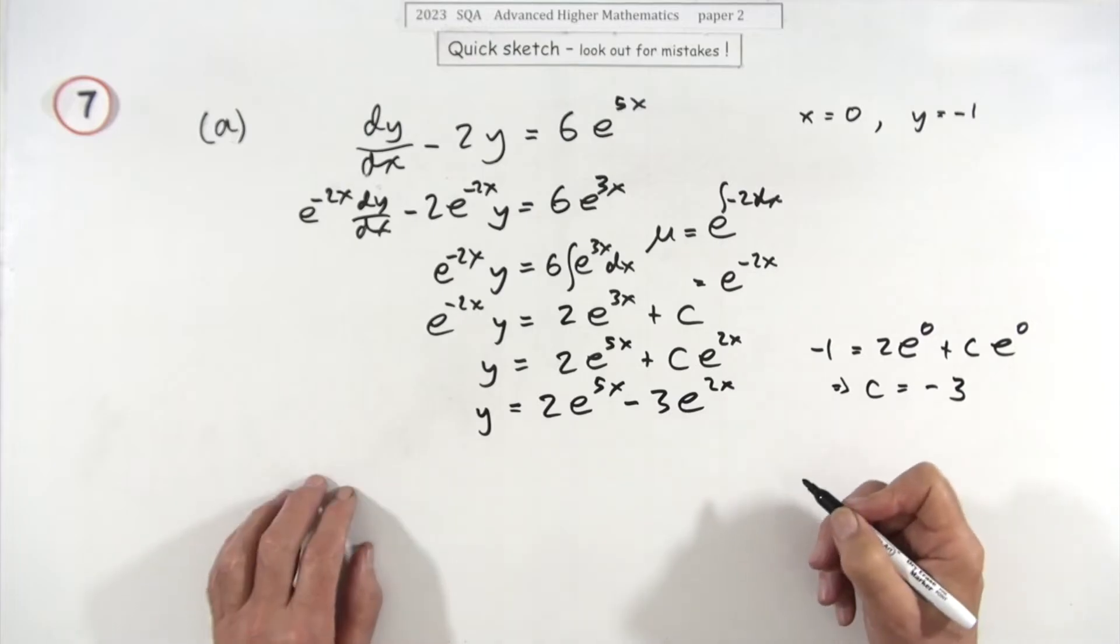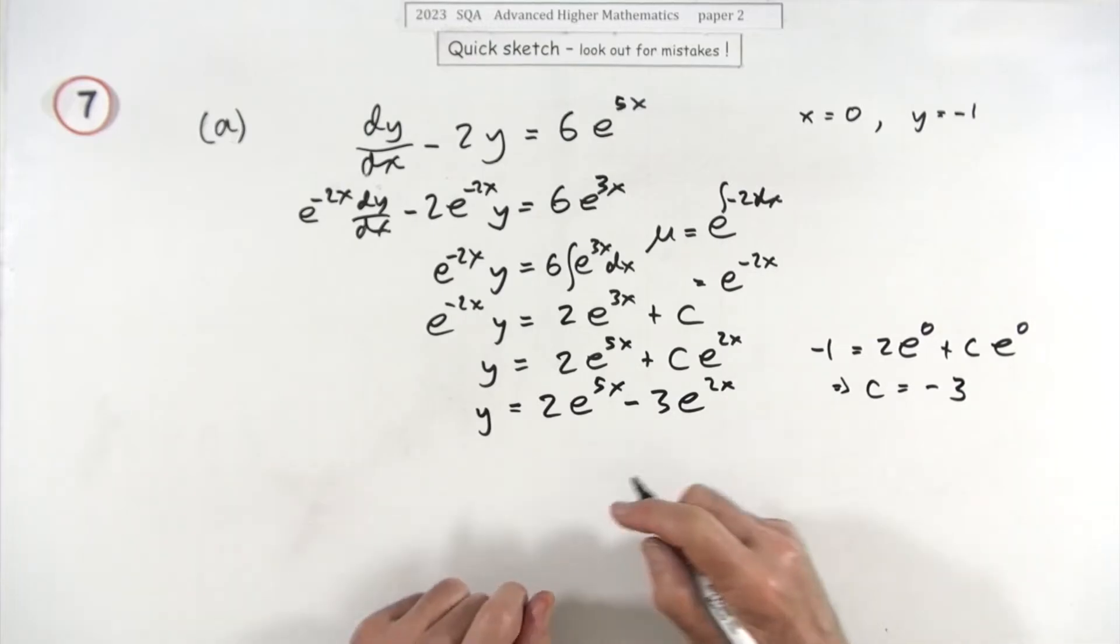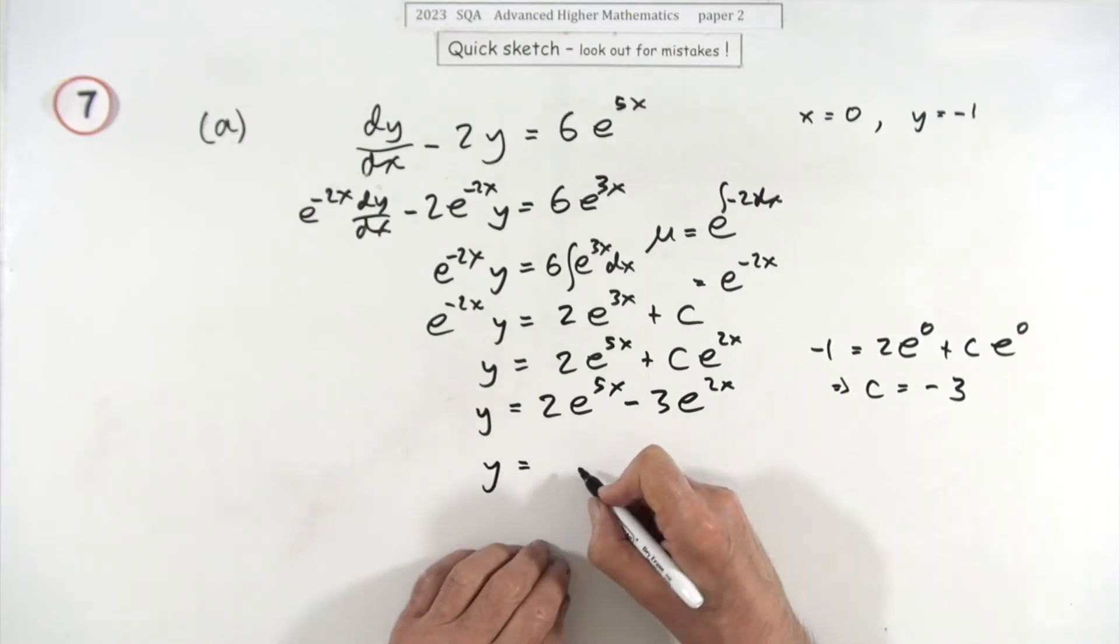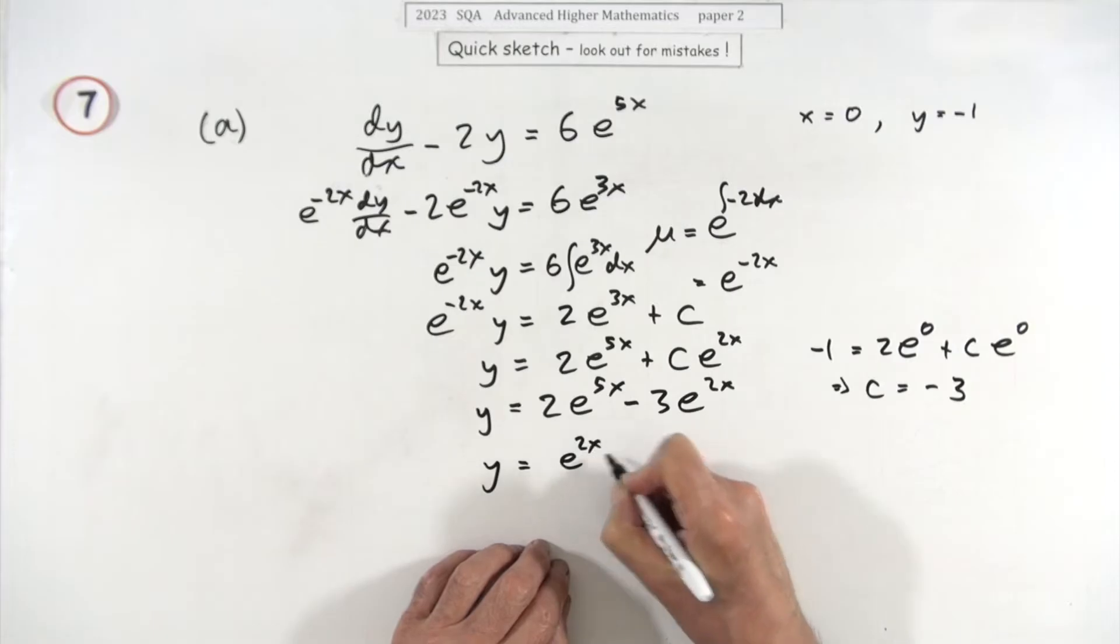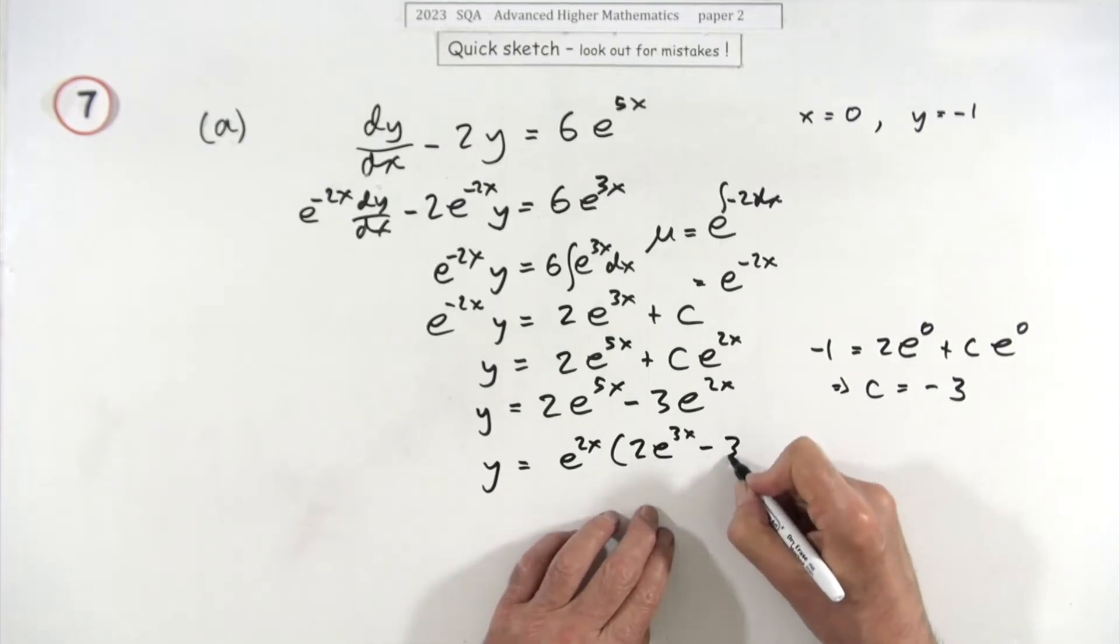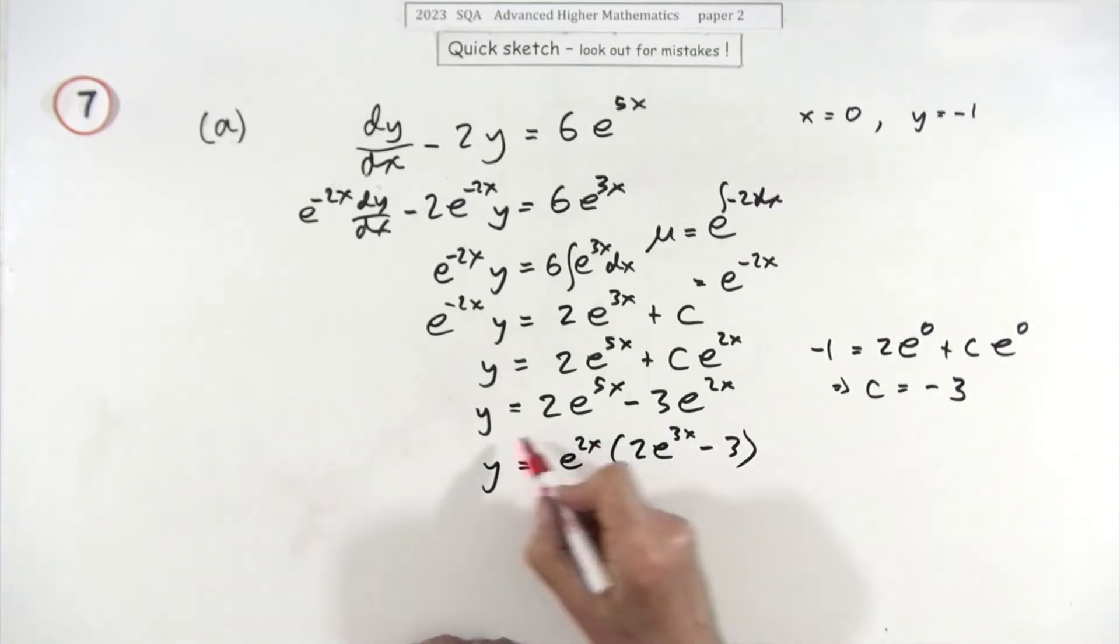So here you are: y equals 2e to the 5x minus 3e to the 2x, unless of course you wanted to tidy that up any further. So you could write, if you wanted, y equals—because there's an e to the 2x in there at least—e to the 2x times 2, there's actually probably more writing with this, more ink down, minus 3. But that'll be the one they're looking for there.